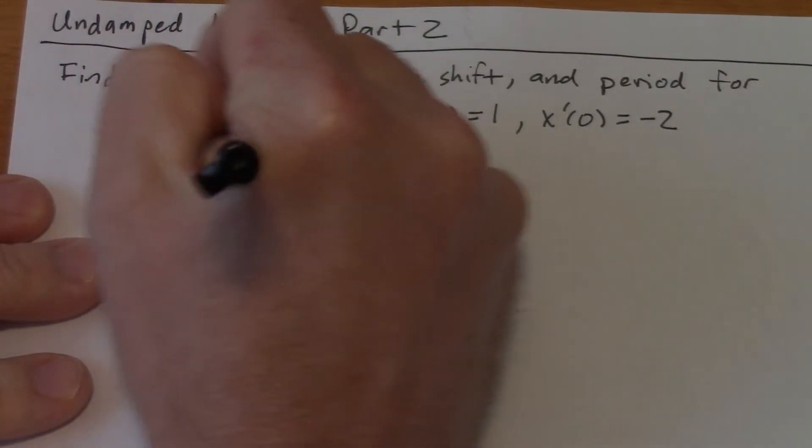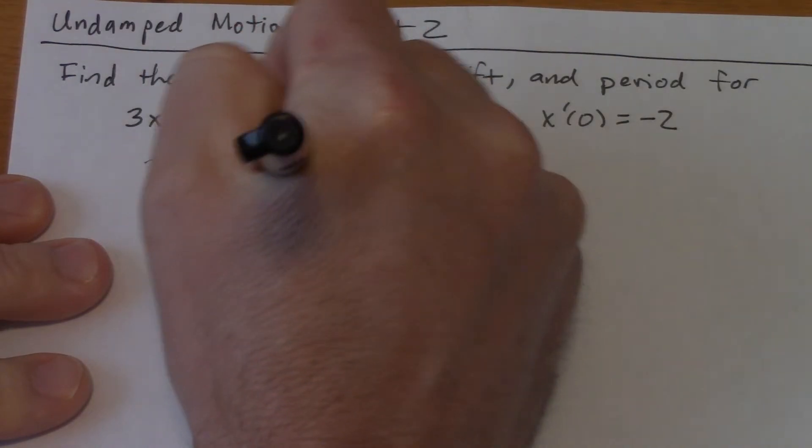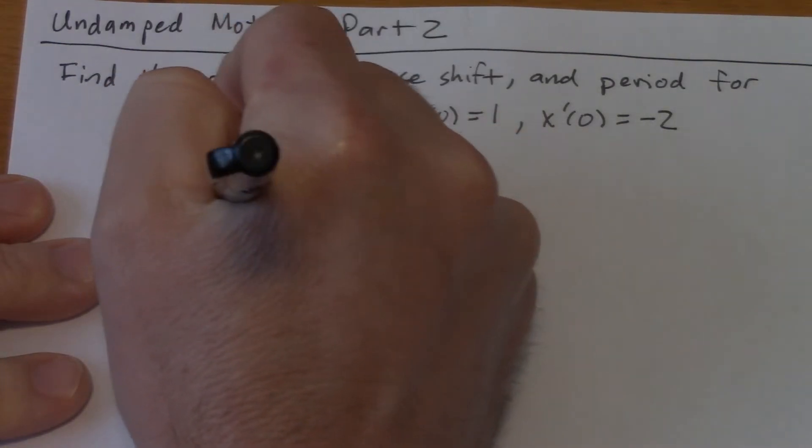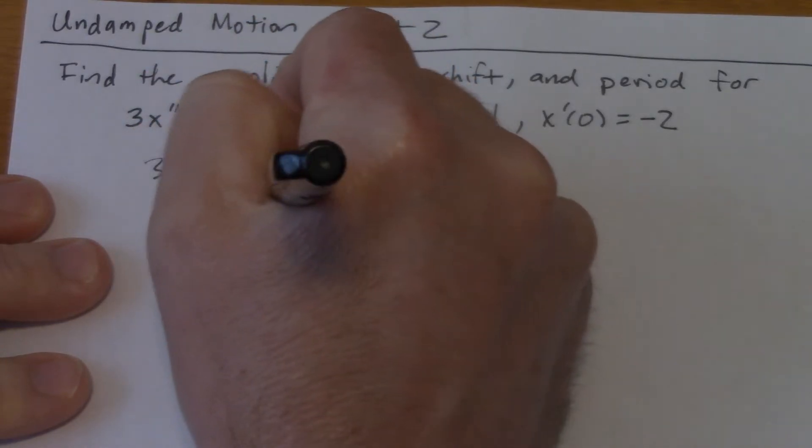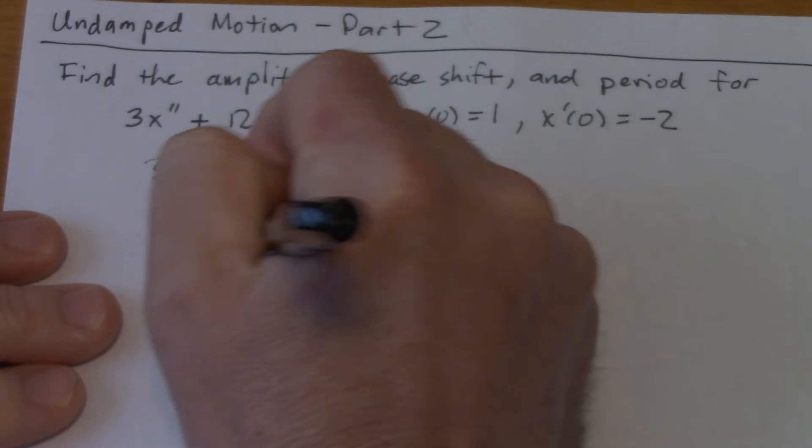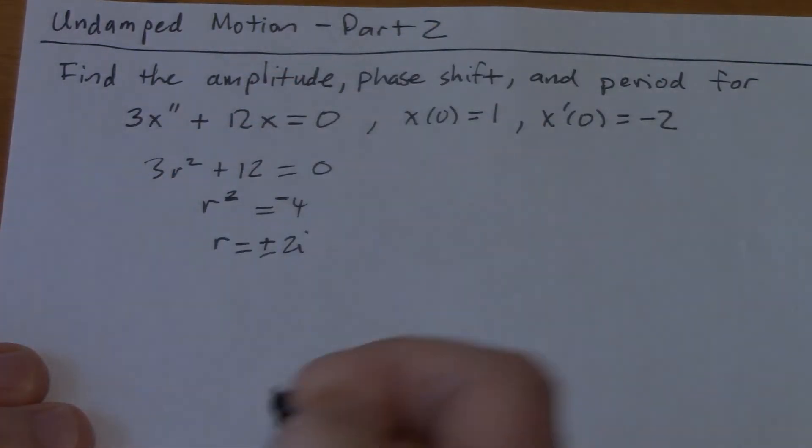All right, so the characteristic equation is 3r squared plus 12 equals 0. So r squared is going to be negative 4. So r is going to be plus or minus 2i.